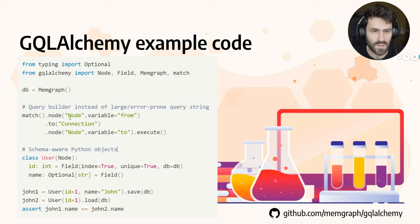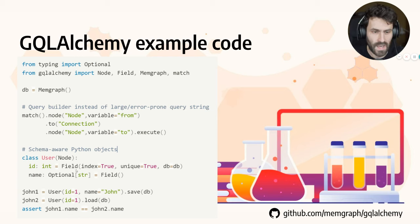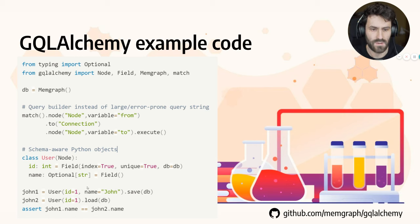This is the actual code. There is an instance of Memgraph, and after that you have two options. One is to use the query builder, which is a set of functions or methods that can be stacked, and at the end the query will be generated and executed against the Memgraph instance. A more advanced option is the schema-aware Python object, which can be annotated with fields and custom properties — for example, marking a property as unique. At the end, you can store these objects directly into the database or fetch existing objects by calling a simple load.